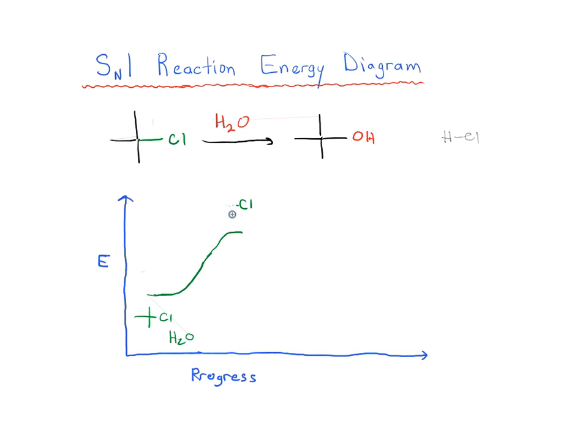So this maximum is kind of like the point of maximum pain for the molecule. The highest energy for the molecule is where you have a partial bond between carbon and the chlorine. And this high energy area is called the transition state. So this is the transition state.